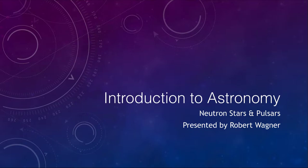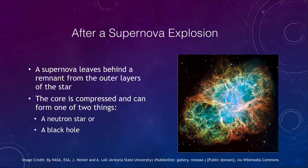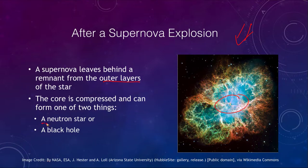Let's look at what happens after a supernova explosion. We've seen images like this before — this is the Crab Nebula, which is the supernova explosion remnant. The outer layers of the star are expelled out into space, but the core left behind can be one of two things: a neutron star if it is less than about three solar masses, or a black hole if it is greater than three solar masses.